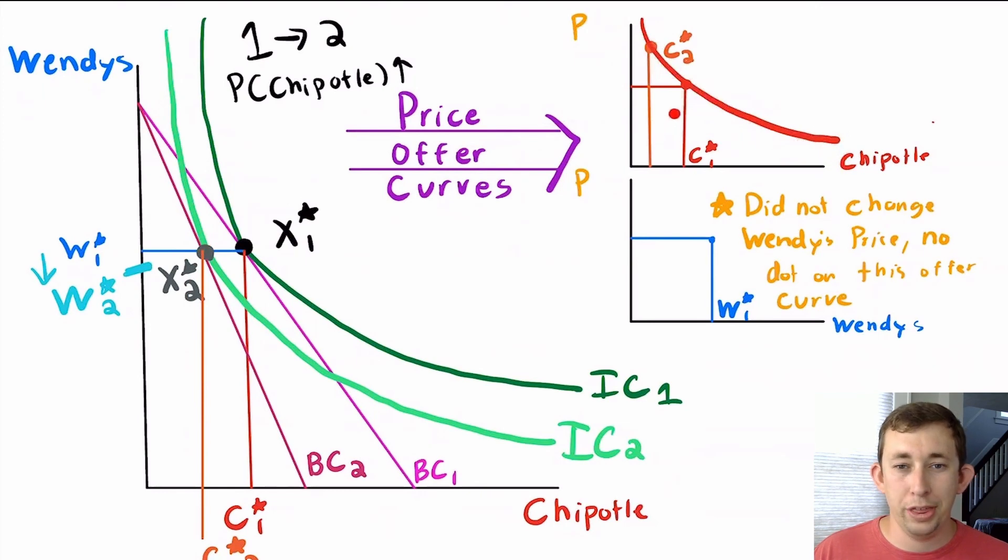Notice that I'm only thinking about the price of Chipotle. So even though I've got this Wendy's price offer curve here, because I'm not changing the price of Wendy's each time I get a new preferred bundle,